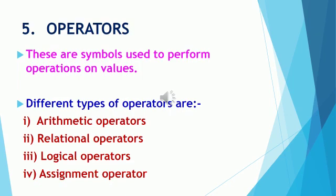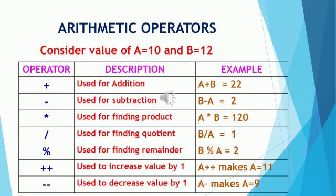The fifth part of a Java program is operators. Operators are symbols used to perform some operations on values. Different types of operators provided by Java are: arithmetic operators, relational operators, logical operators, and assignment operators. Arithmetic operators are used to perform basic arithmetic operations on given values, including addition, subtraction, multiplication and division.